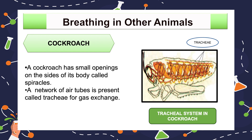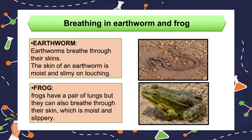These air tubes or trachea are found only in insects and not in any other group of animals. Earthworms breathe through their skin. The skin of an earthworm feels moist and slimy — gases can easily pass through it. This is known as cutaneous respiration. Though frogs have a pair of lungs like human beings, they can also breathe through their skin, which is moist and slippery.